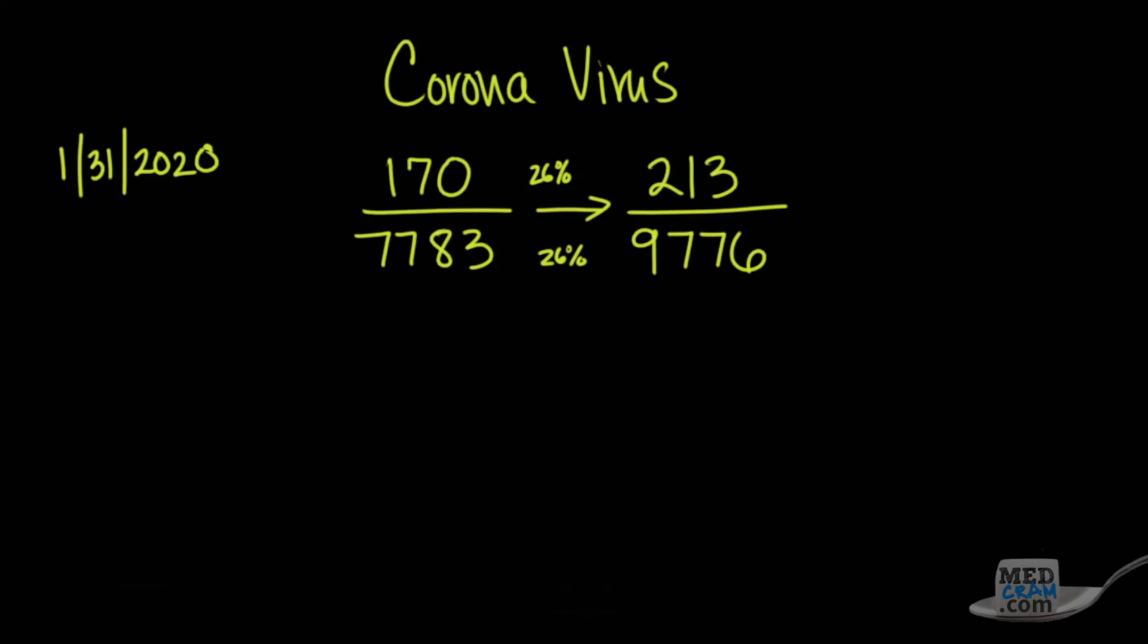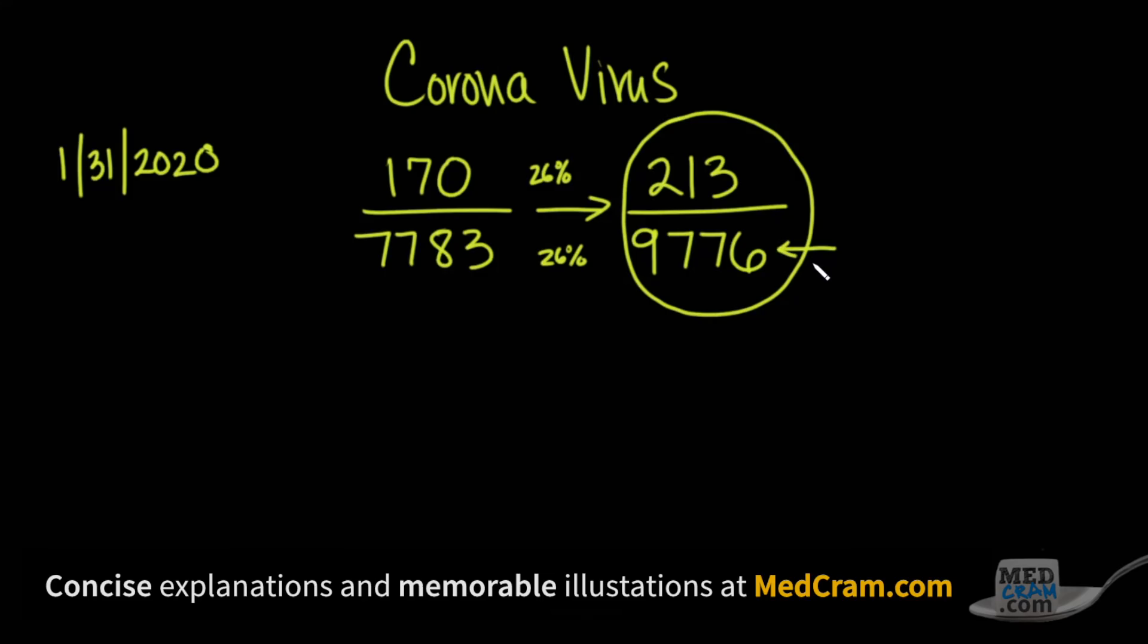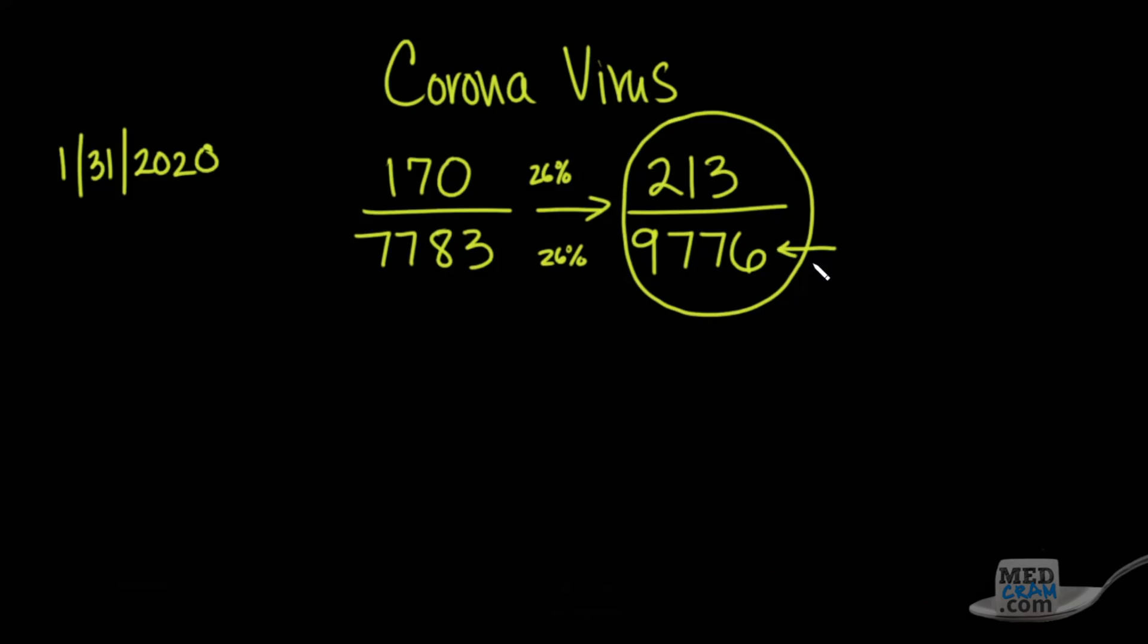Now, I've noticed I've got a lot of comments about the potential fallacy of dividing the numerator here, which is the number of deaths, which is current, divided by the number of infections, which may have not matured to the effect that they may have caused mortality because it may be too early in the course. And I understand that, and a lot of people do understand that.